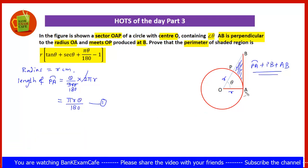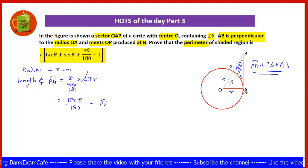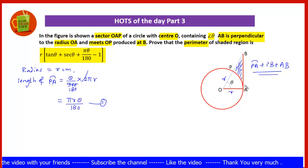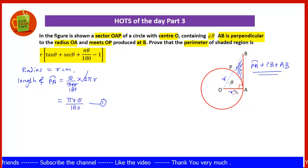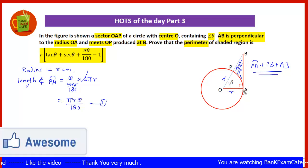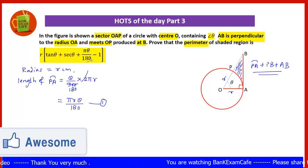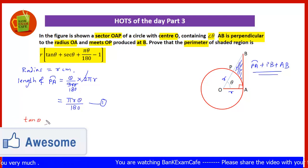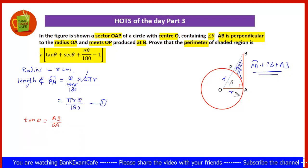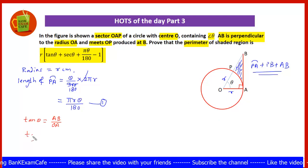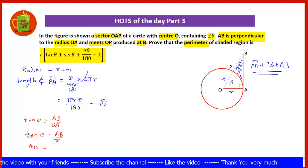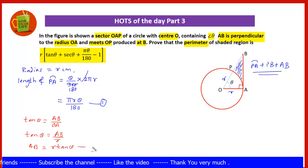Now we will find the length AB. Since angle A is 90 degrees, this is a right angle triangle and we can apply trigonometry. So tan theta equals opposite upon adjacent, that is AB upon OA. Since OA is the radius R, we get tan theta equals AB upon R, and therefore AB equals R tan theta. Let this be equation number 2.